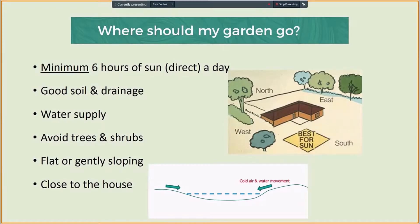Vegetable gardens should be planted in areas that get full sun for a minimum of 6 hours a day. 8 to 10 hours of sunlight is ideal. A great way to measure the hours of sunlight is to watch how the shadows fall on your potential garden plot. Step out into your yard multiple times during the day and snap some photos of how the shadows of the trees and structures move across your landscape.